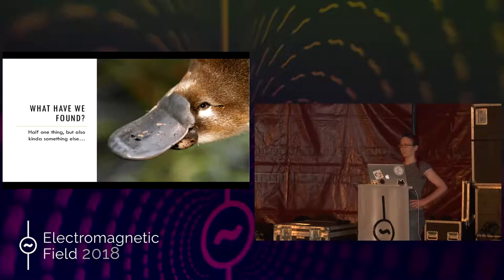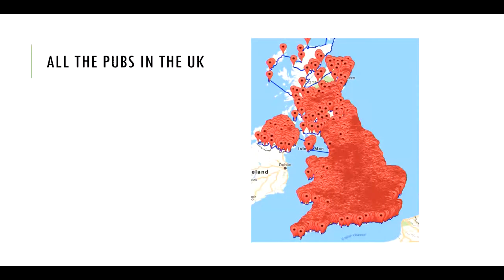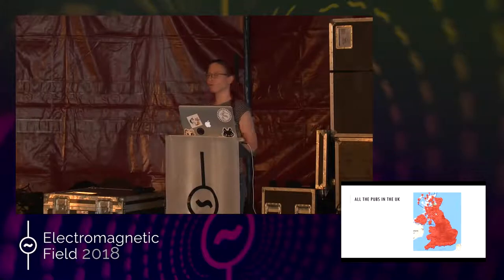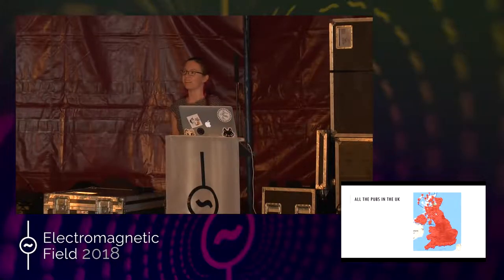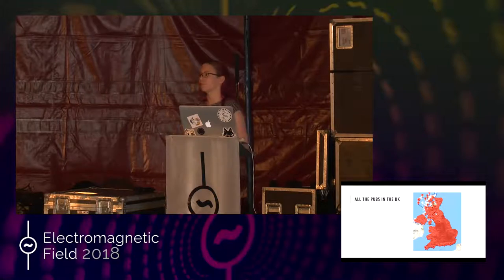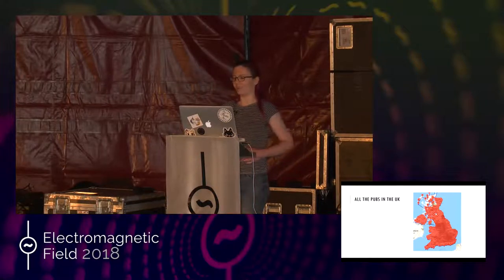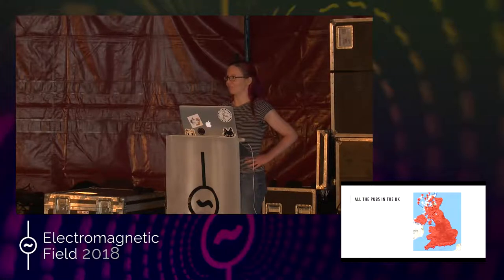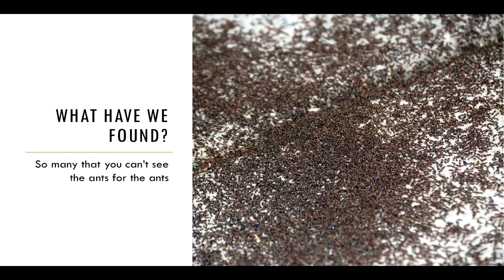Let's move on to the next visualization. We're all in the UK so we probably all like our pubs. This map is of every pub in the UK, and you can probably tell it is not a very useful map — would anyone like to try and point out their local on this? The problem here is that there is too much data. It's a really easy thing to do in visualization: to say 'I need to show everything so I'm going to put it all into a graph,' but if you put too much in you can't see anything. It's kind of like ants — when you see a whole group moving around you can't pick out a single ant anymore, they just become a cluster.